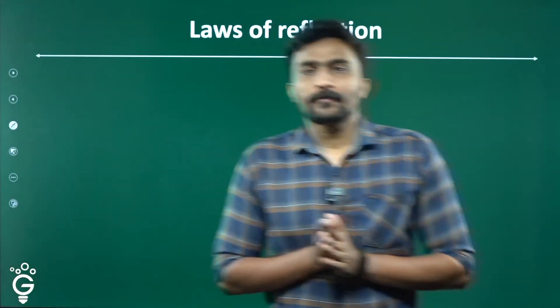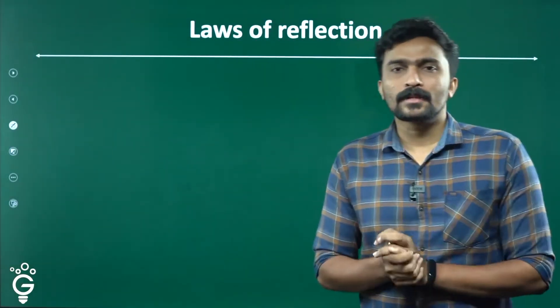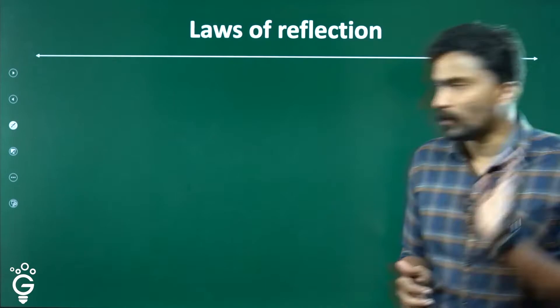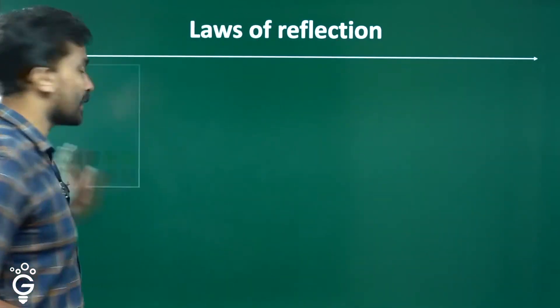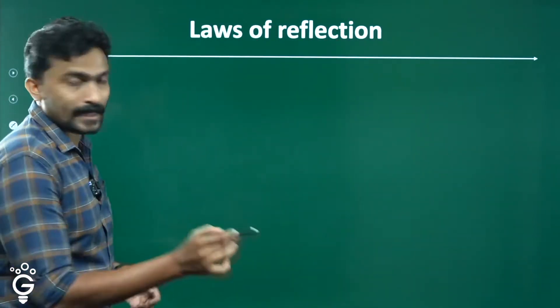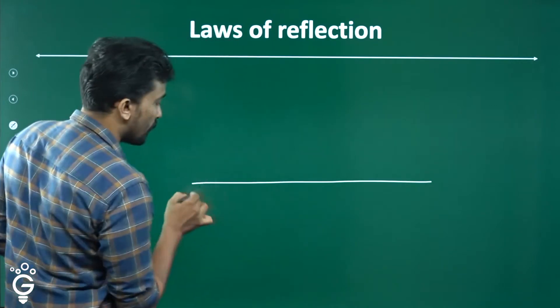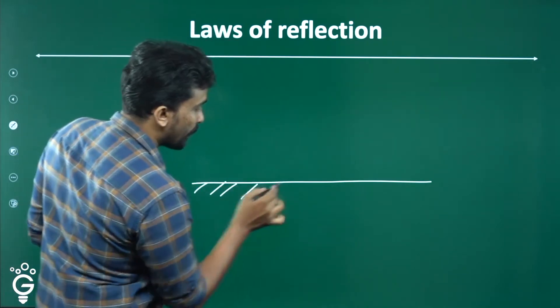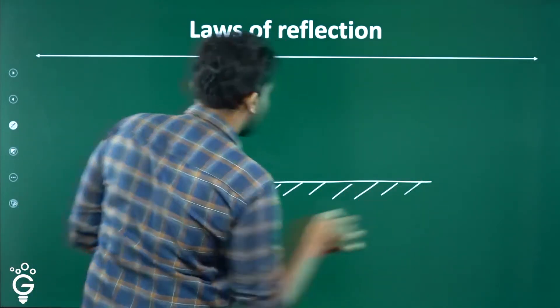Okay. Loss of Reflection — very simple. You can learn a lot from the laws of reflection. You have already studied the same class. So, we have a reflecting surface with the same diagram.